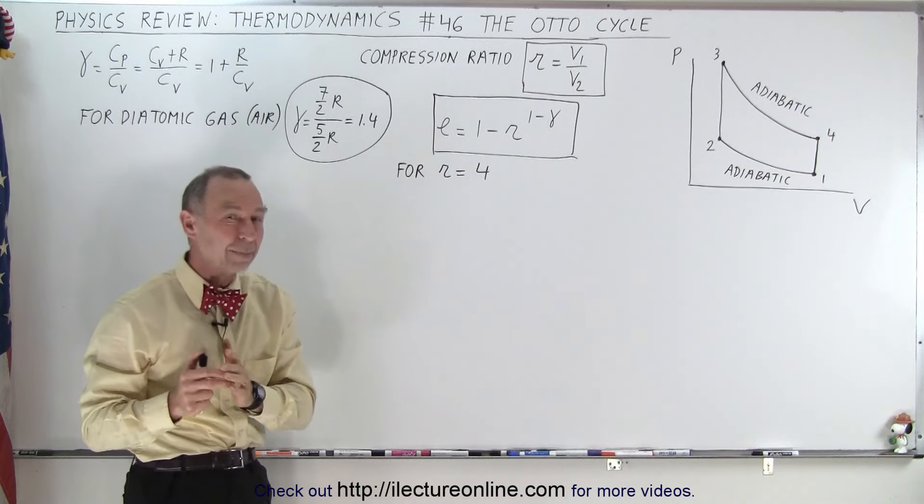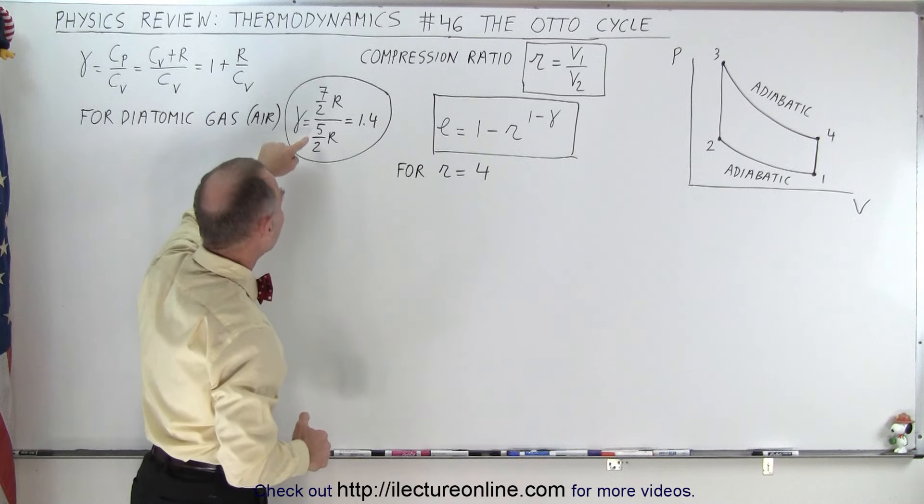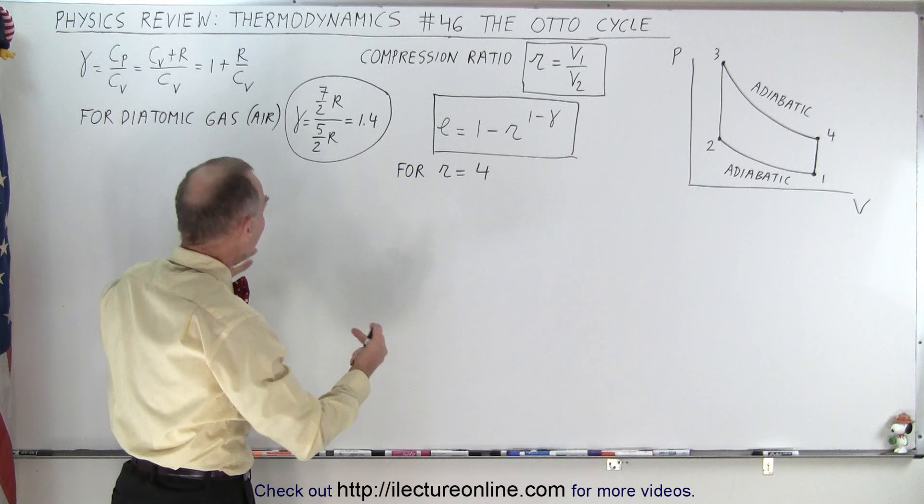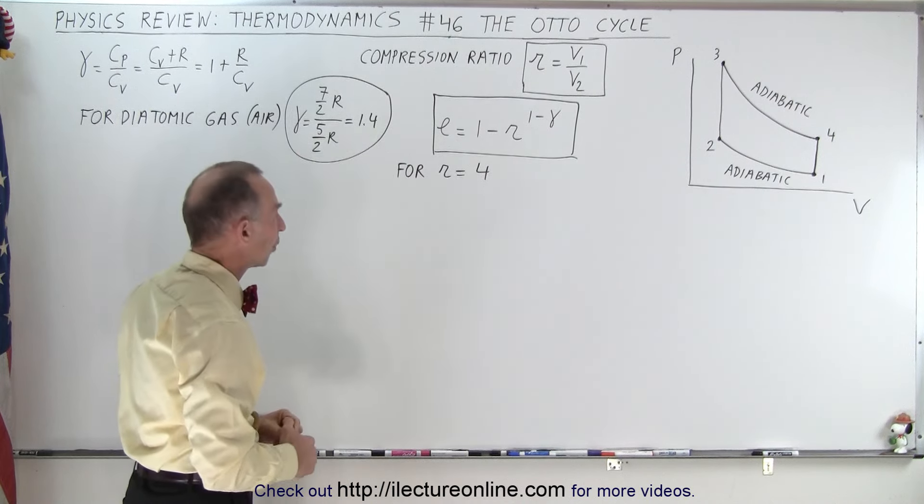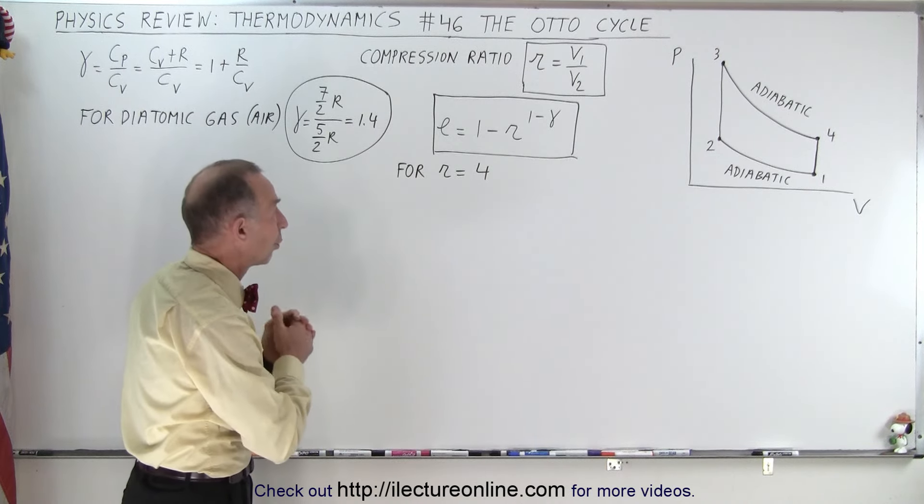Now for a diatomic gas, we know that c sub p is 7 over 2 r and c sub v is 5 over 2 r. Of course air is a diatomic gas. That's why we use this for gamma. When we simplify that, we get 1.4.